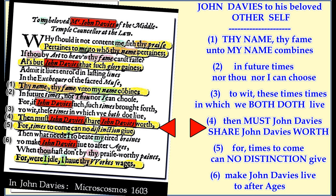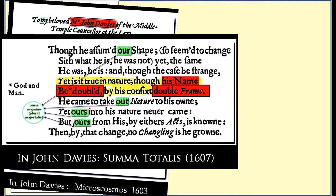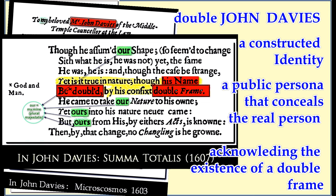There's something else in that poem — the line about 'idle eye.' The video suggests it could be a playful way of hinting at the nature of a pseudonym: the name John Davis is 'idle' or inactive because it's not the true identity behind the work. And another part of that poem reads: 'what is he was not yet the same, he was he is in nature, though his name be doubled by his configs double frame.' The phrase 'double frame' seems to refer to a constructed identity — a public persona that conceals the real person, like Davis giving us a peek behind the curtain.